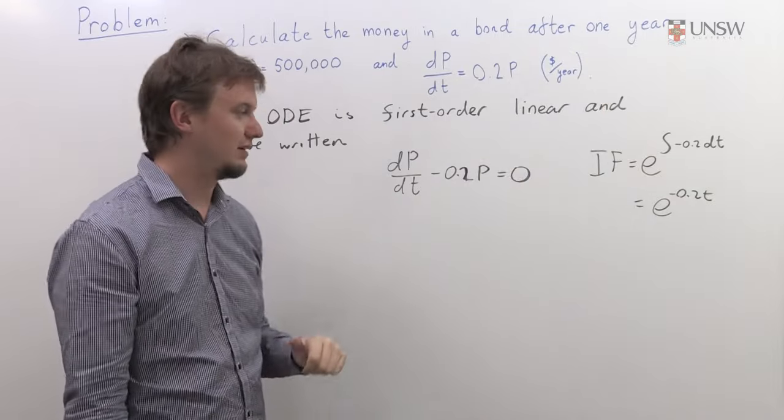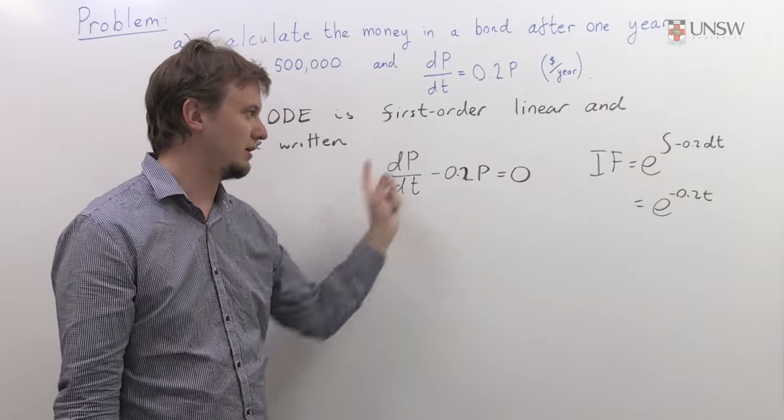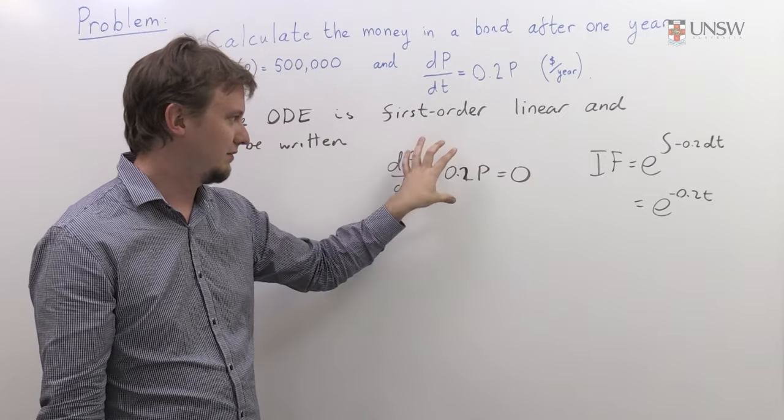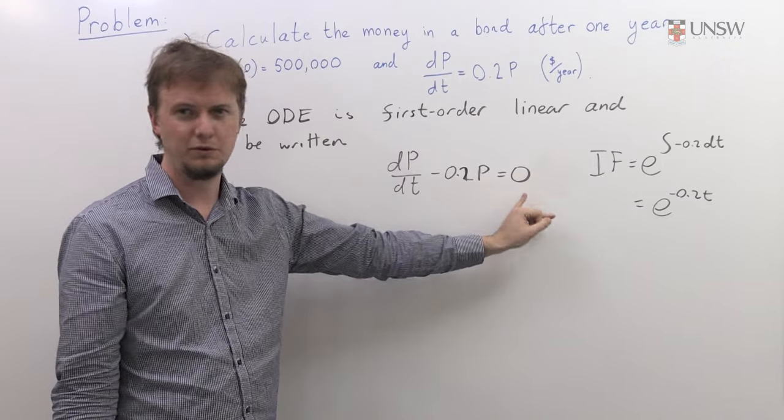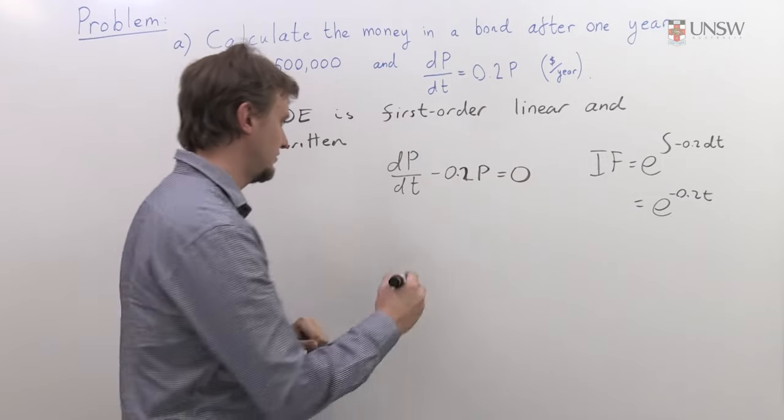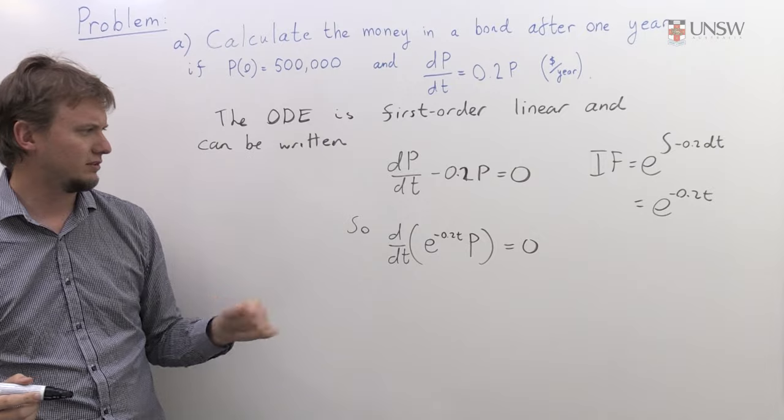The whole point of the integrating factor is that if you multiply this equation by the integrating factor, the left-hand side will factor, and this will just be a constant times integrating factor. Although here it's zero, so we don't see any change.